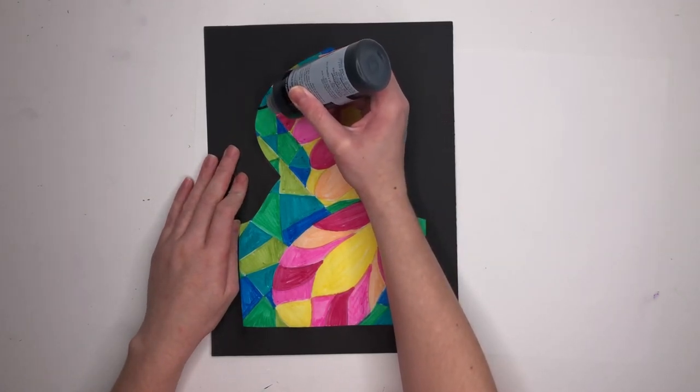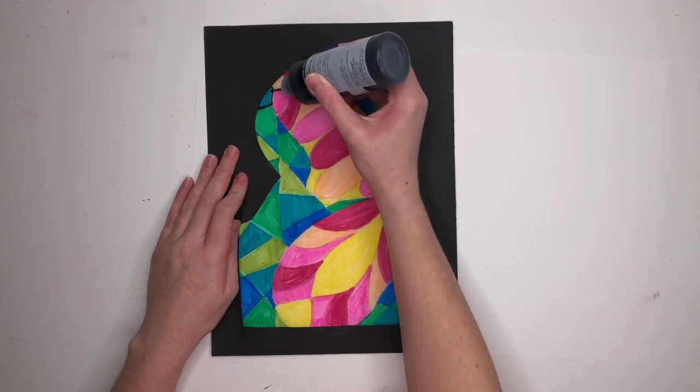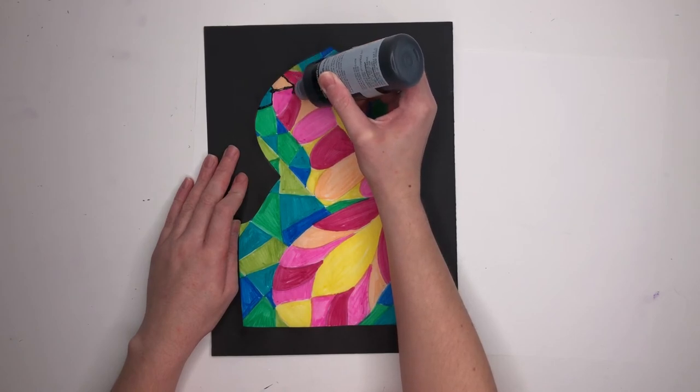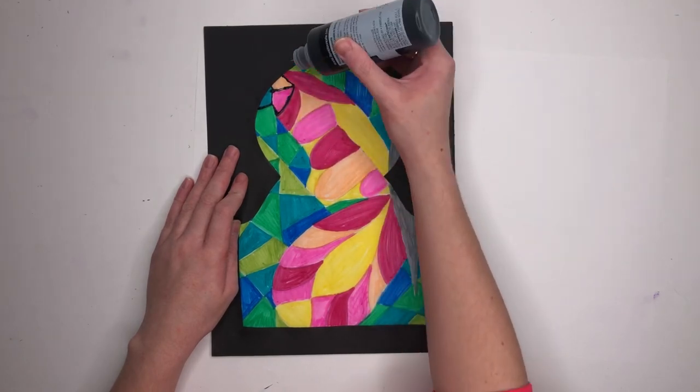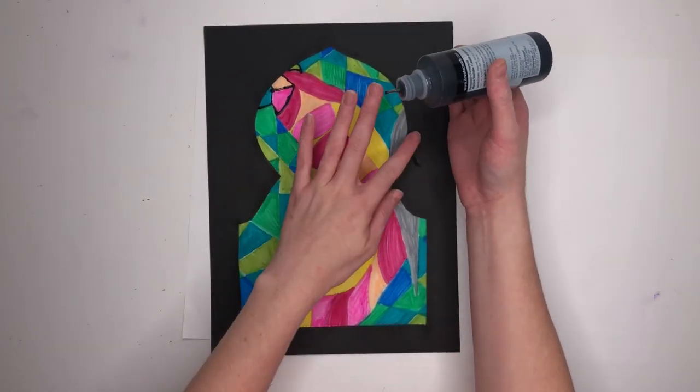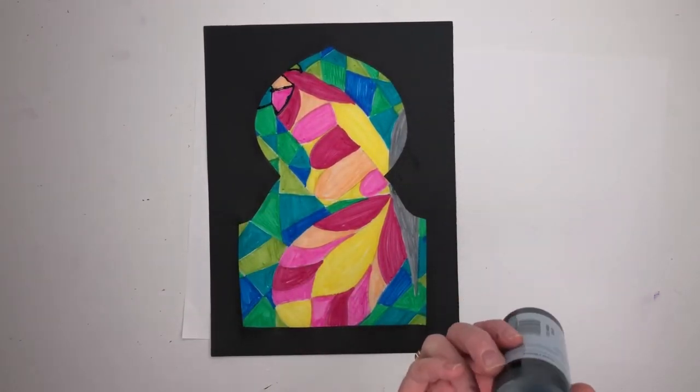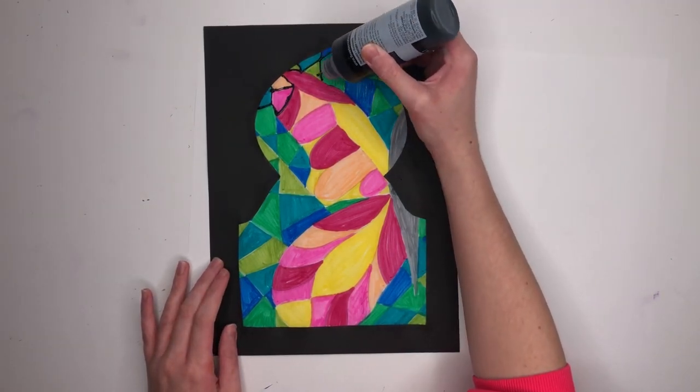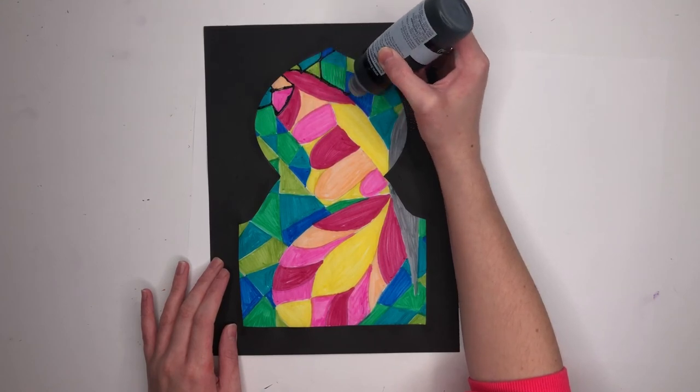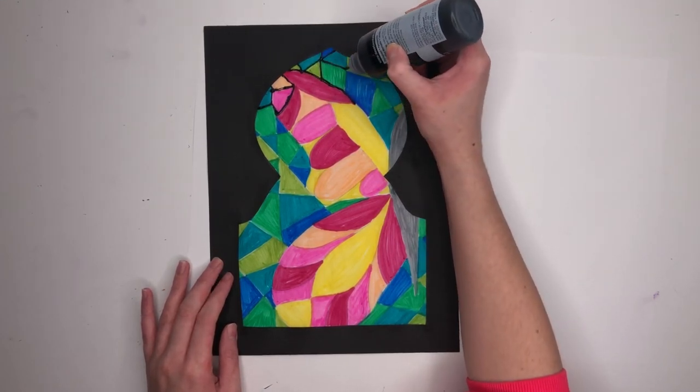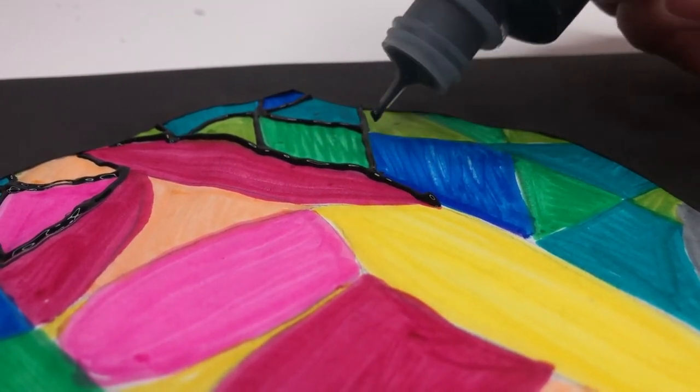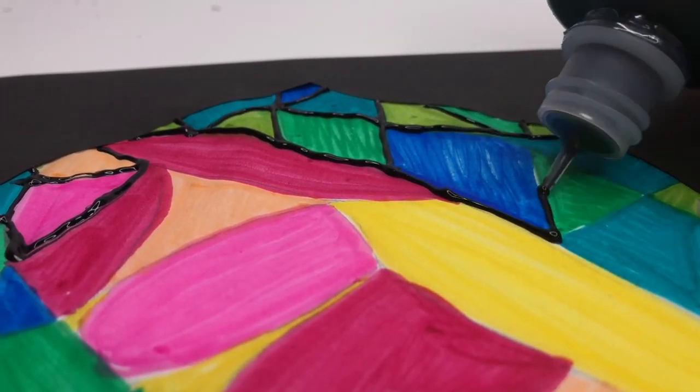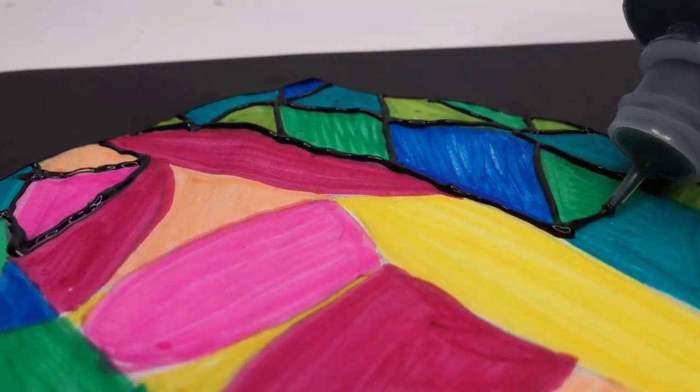Your last step is going to be to trace all of your borders with puff paint. Notice how I'm resting the tip of the paint bottle on the paper. I'm not trying to hold it way up high. I'm also not squeezing the bottle very hard. You don't want too much to come out.